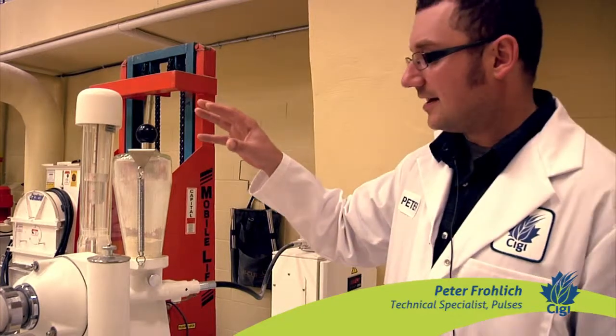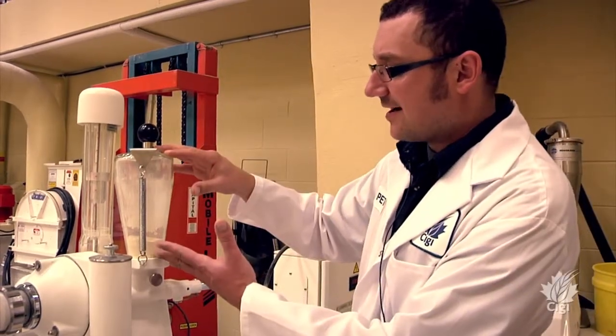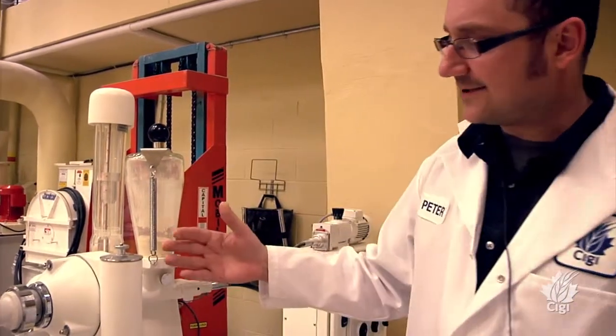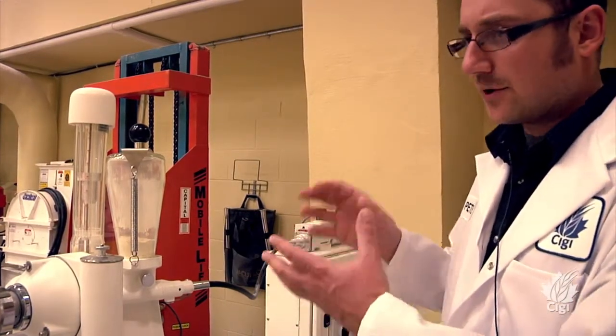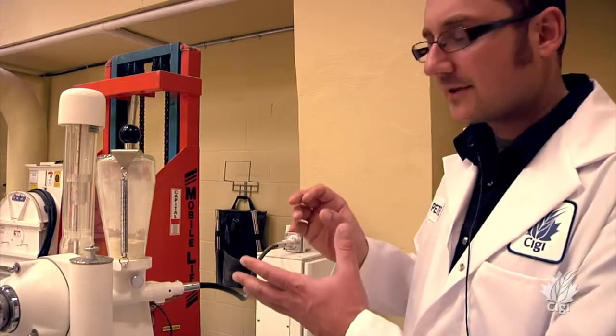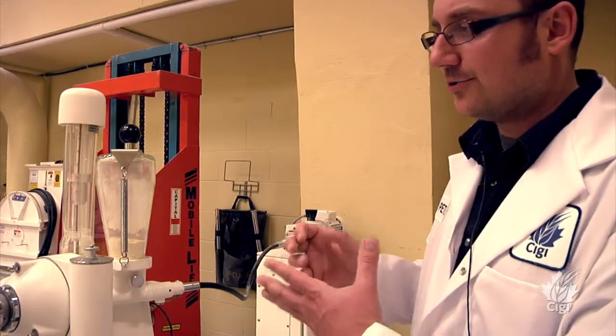What I can do is take this flour, put it through the system, and separate a coarse fraction and a fine fraction. The coarse fraction will be the starch, and then the fine fraction will be the protein.